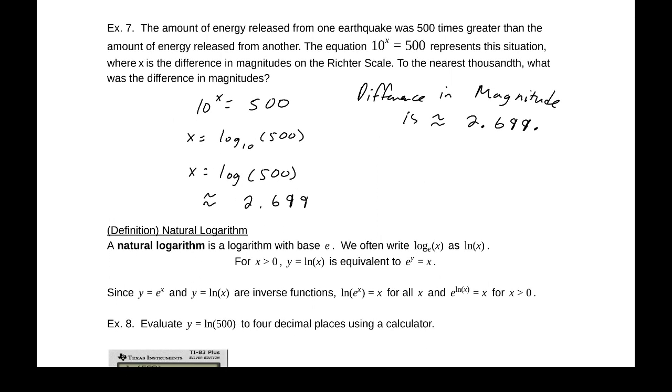The next common base is base e. When we have something written as base e, log base e of x is written as ln of x. That is the natural log. That's why it's ln. So ln of x is equal to or equivalent to e to the y equals x.